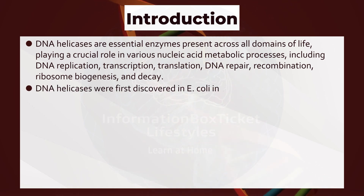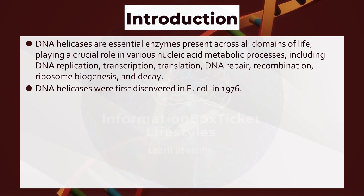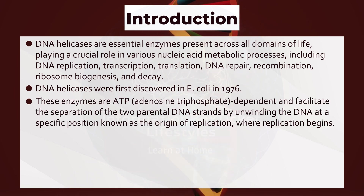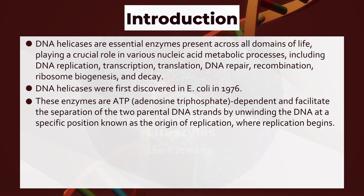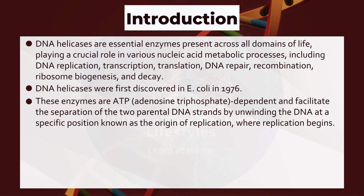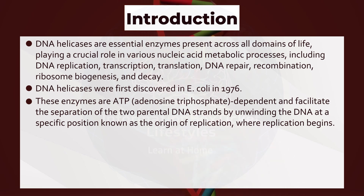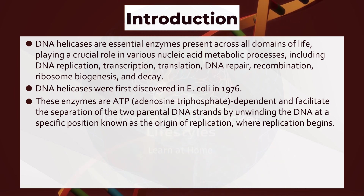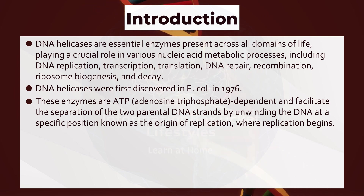DNA helicases were first discovered in E. coli in 1976. These enzymes are ATP (adenosine triphosphate) dependent and facilitate the separation of the two parental DNA strands by unwinding the DNA at a specific position known as the origin of replication, where replication begins.